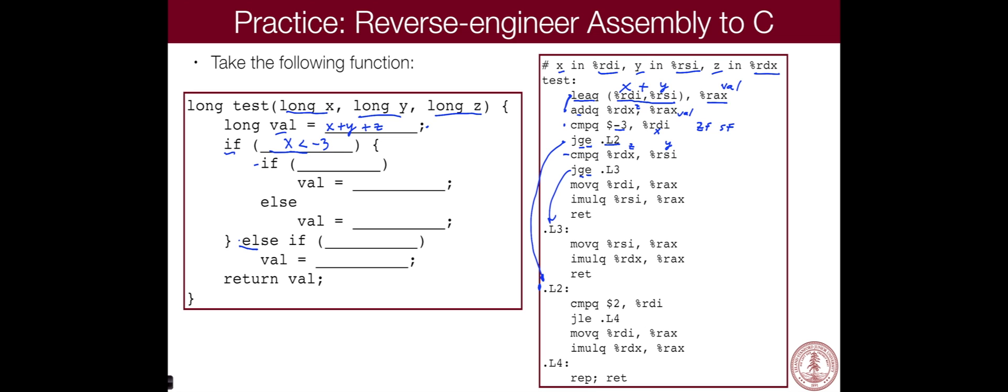The next line is if this is not true, right? So we are jumping. If RSI is greater than or equal to Z, we are going to the else part.